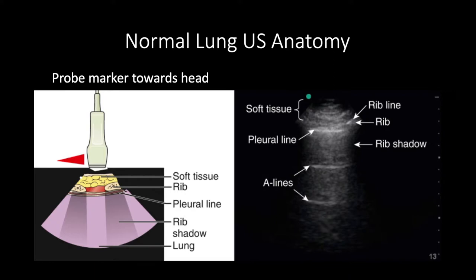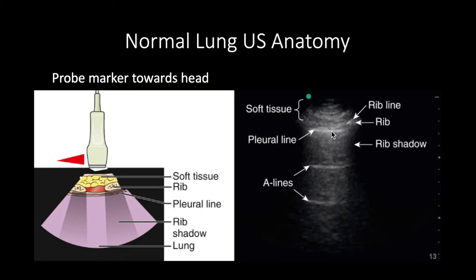Let's talk about normal lung ultrasound anatomy. With the phased array probe marker pointed towards the patient's head, closest to the probe is the soft tissue — fat and muscle — and then below that is a bright white line emerging from underneath the ribs: that's the pleura. The ribs cause shadowing because ultrasound waves can't travel through bone, and then you have A-lines below the pleural line that are equidistant from each other. The distance from the top of the screen to the pleura equals the distance between each successive A-line — this is normal lung ultrasound anatomy.